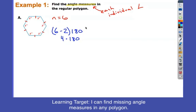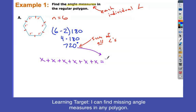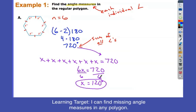4 times 180 gives 720. So if I add up all the angles, I put plus signs between all of them — make sure you're writing this down, you might want to pause the video. That gives x + x + x + x + x + x, which equals 720, not 180. If it equaled 180, it would be a triangle — this is a hexagon. Combining like terms, 6x equals 720. Divide by 6, and each of those angles equals 120 degrees. That makes sense for a regular hexagon, where all angles are equal.